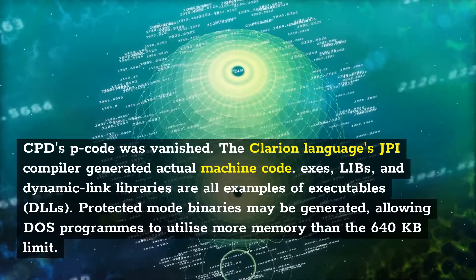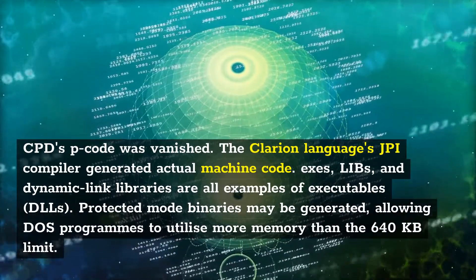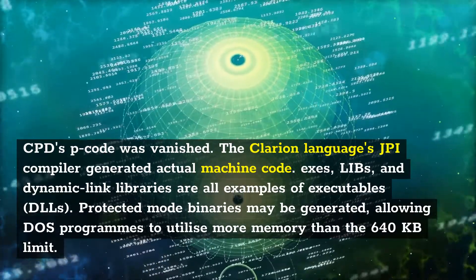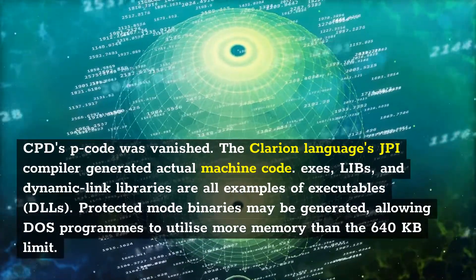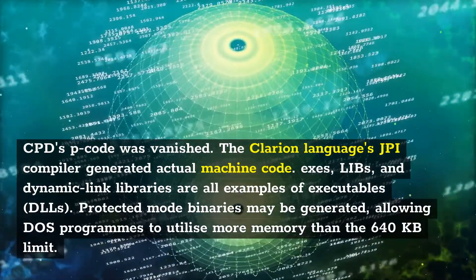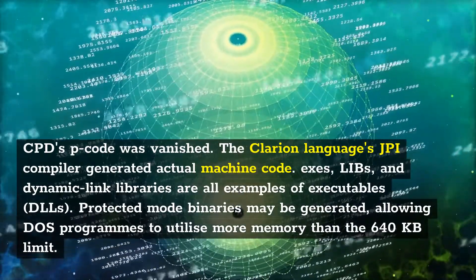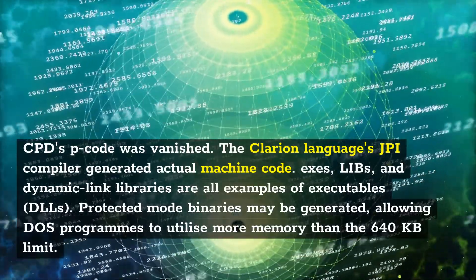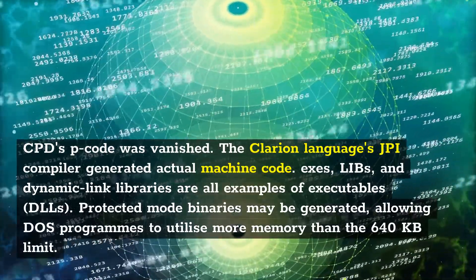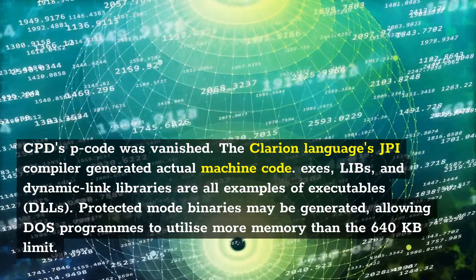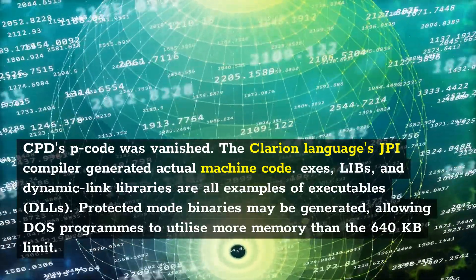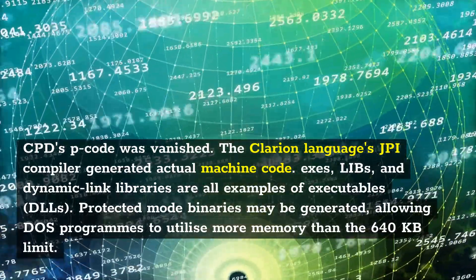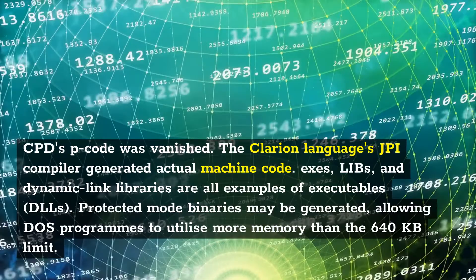CPD's P-code was eliminated. The Clarion language's JPI compiler generated actual machine code. Executables, LIBs, and dynamic link libraries (DLLs) were all supported. Protected mode binaries could be generated, allowing DOS programs to utilize more memory than the 640 kilobytes limit.